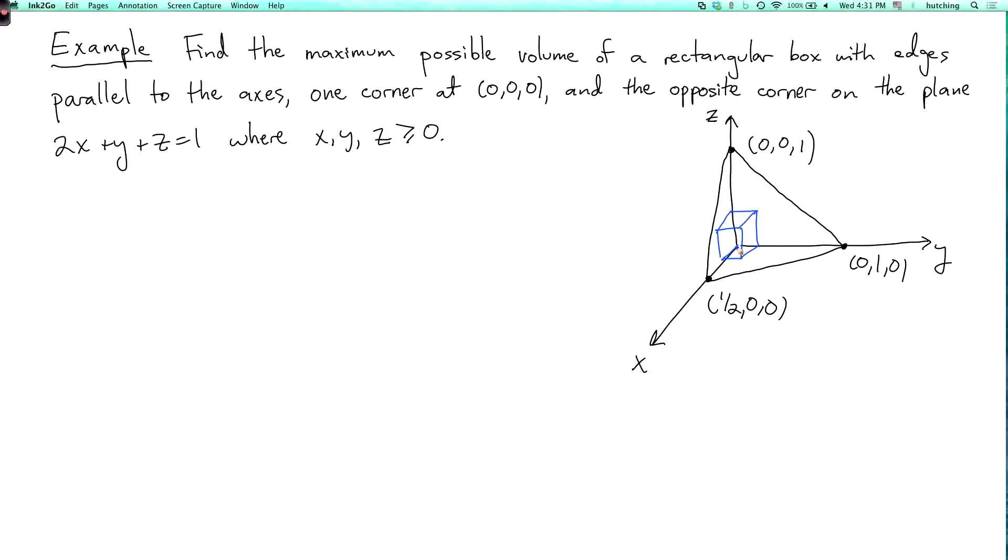So one corner of the box is at the origin, and the other corner of the box is at some point. Let's call this (x, y, z), which is on the plane, so 2x plus y plus z equals 1.